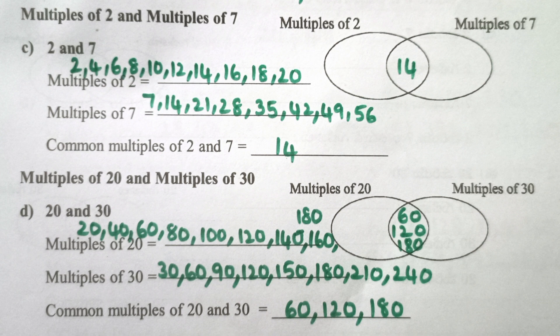Multiples of 20 and multiples of 30. Multiples of 20: 20, 40, 60, 80, 100, 120, 140, 160, 180. Common multiples of 20 and 30 are 60, 120, 180.